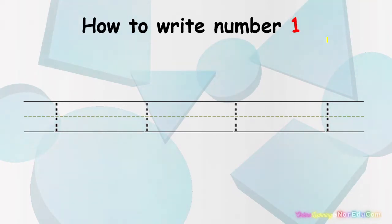How to write number 1. Let's write it together. Let's start. We start at the top and do the straight line down. It's very easy. Let's start again. We start at the top and do the straight line down. Number 1. We start at the top and do the straight line down.